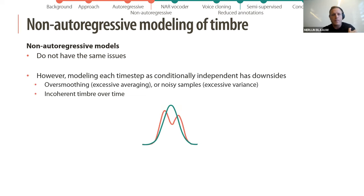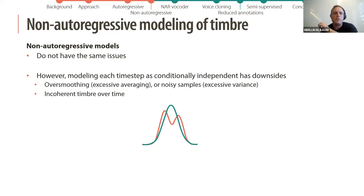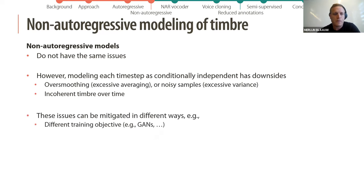However, modeling each time step as conditionally independent has some downsides. Typically this results in over-smoothing — excessive averaging — or noisy samples with excessive variance. Also, timbre can shift over time, becoming incoherent, and there can be fluctuations in loudness.